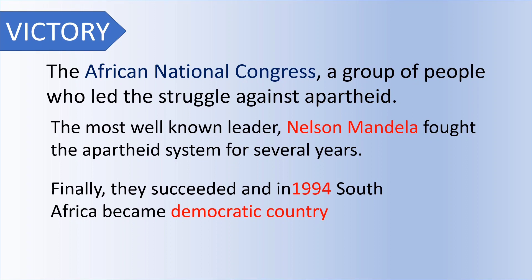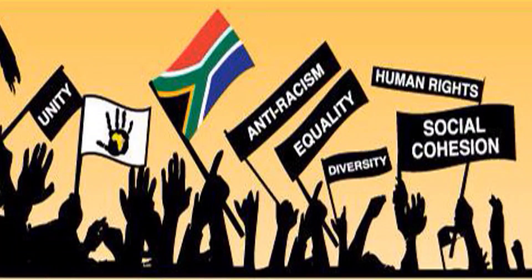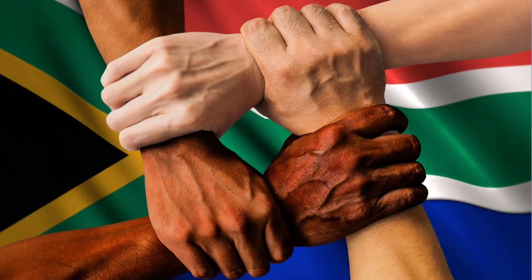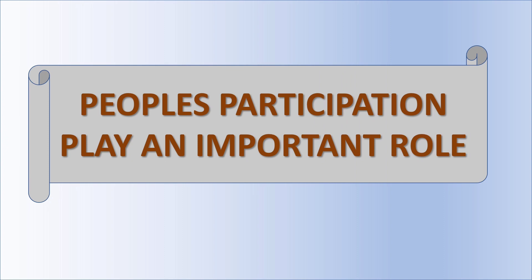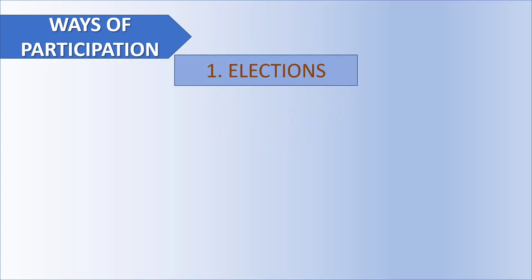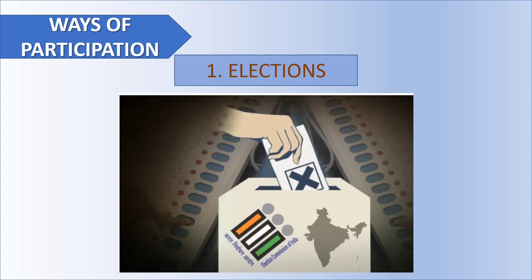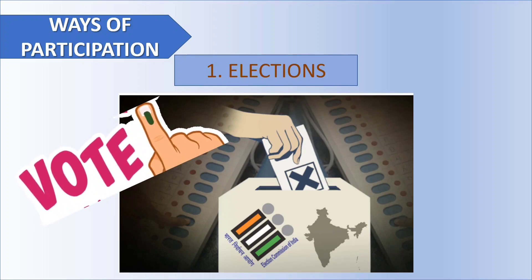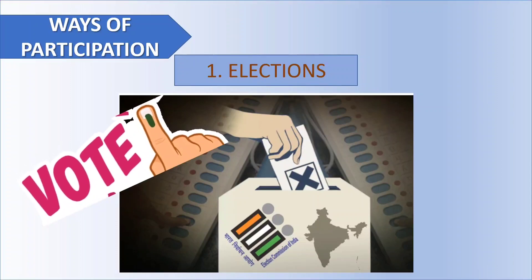Not just India, but many countries struggled to make their country democratic. By this we can see how people's participation plays an important role in gaining freedom and making government decisions. One way of participation seen in our country daily is elections. In elections, all people can participate by selecting a representative who will represent them and put their views to the government. If we don't like the working of the government, we can change it — in India, after every five years.